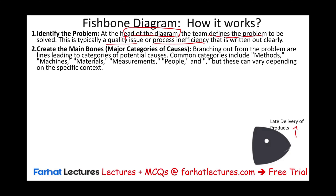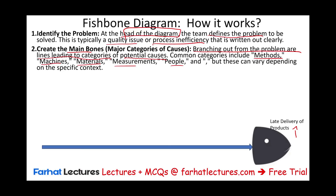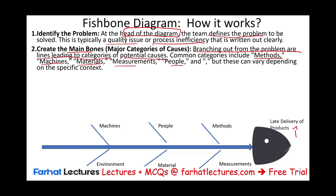Then we create the main bones — the major causes. Branching out from the problem are lines leading to categories of potential causes. Those could be methods, machines, material, measurement, and people, but these can vary depending on the specific context. Each bone represents a major category of a cause.